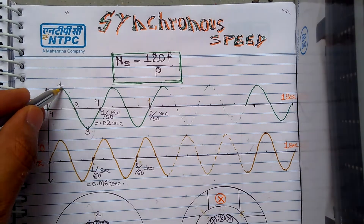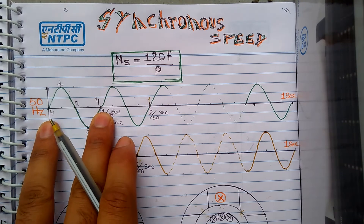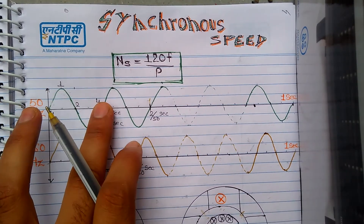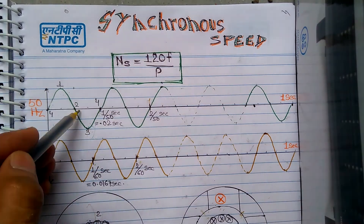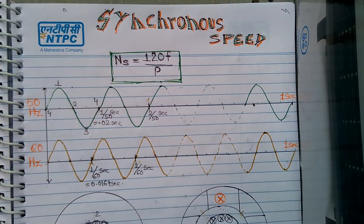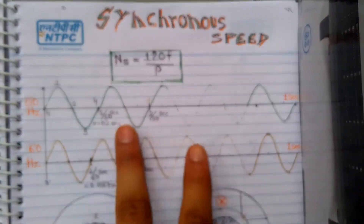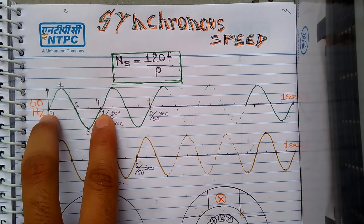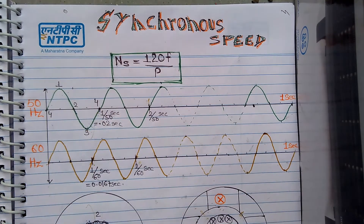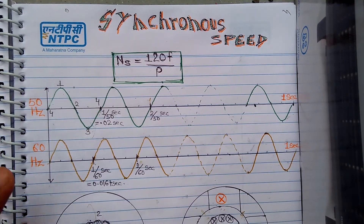One cycle means going from zero to peak to zero to negative peak to zero — that full wave is one cycle. So 50 Hz means this plot occurs 50 times in one second. To plot it once, the time taken will be 1/50 = 0.02 seconds. Now, what does that mean for a rotating magnetic field?